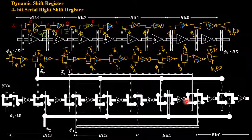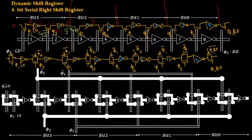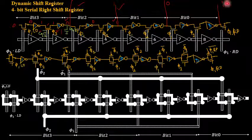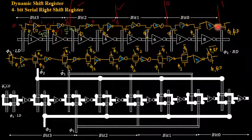At the end I will be getting outputs from inverter 2, inverter 4, inverter 6, and inverter 8. The first value stored, which was logical 1, will appear at inverter 8 output. The next value 0 will appear before that. If I start loading, I will obtain outputs through the terminals of inverter 2 and inverter 4. From terminals 2, 4, 6, and 8, I can consider it as a parallel output. For serial output, I can take it directly from terminal 8, the output of inverter 8.